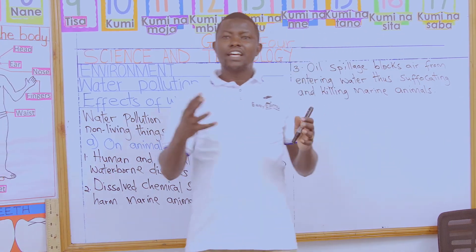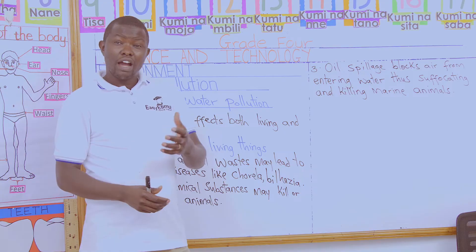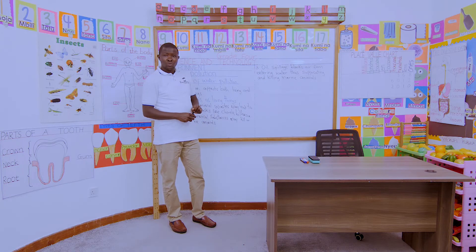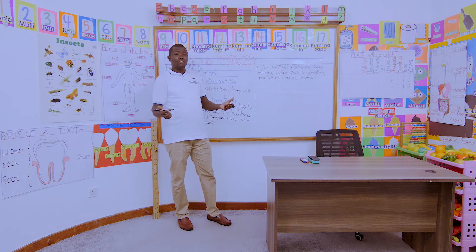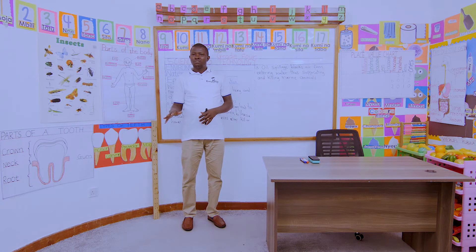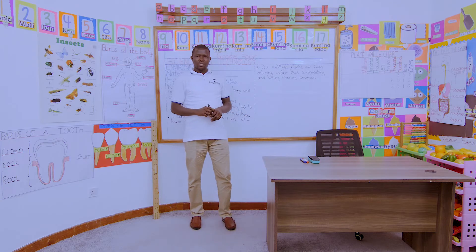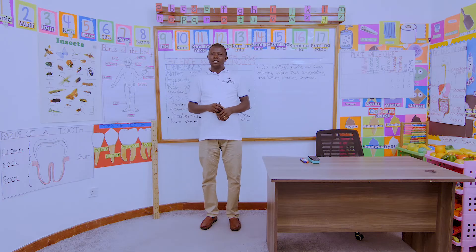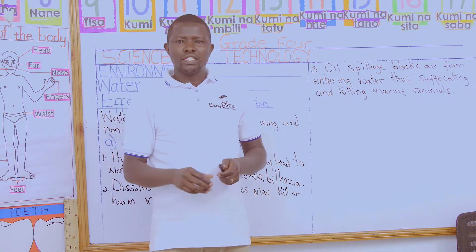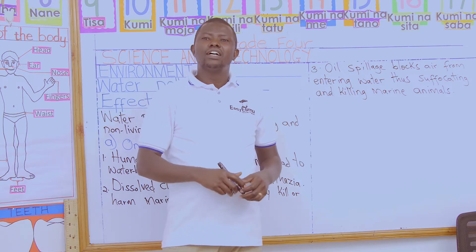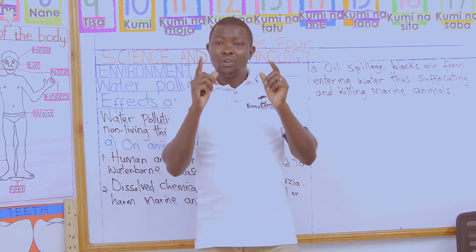So let us avoid excessive use of farm chemicals to make sure our marine animals are safe. We also have another effect of water pollution on animals: when oil spills, it blocks air from entering the water. Once the air has been blocked, it suffocates and kills animals living in water — the aquatic animals. The oil spillage blocks the entry of oxygen into the water, so the animals inside cannot breathe, and they will suffocate and die.